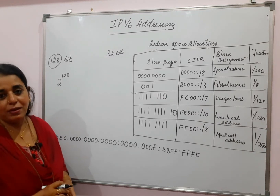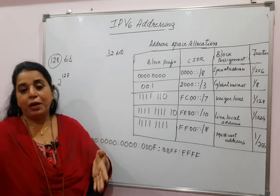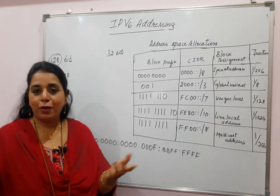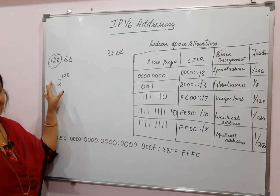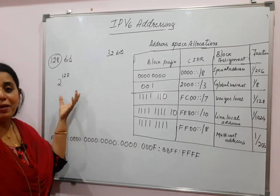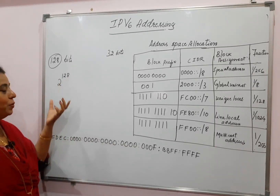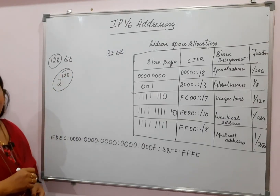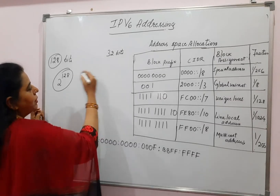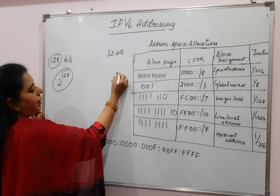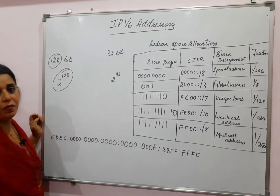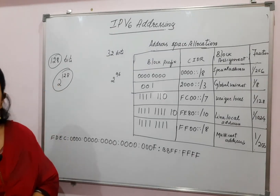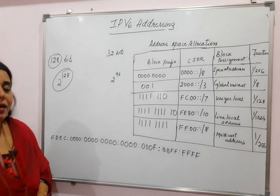In IPv4, with 32 bits — 2 to the power of 32 — we were able to tell the number is around 4 billion. But in IPv6, it is very difficult to state the total amount. In this addressing scheme, 2 to the power of 128, we can say it is 2 to the power of 96 times more than IPv4. That many addresses are there in IPv6 addressing.